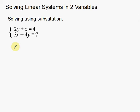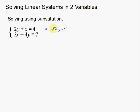The first thing you notice about this problem is that we don't have a variable that is by itself. So one of the first things I have to do is take one of my equations and solve for a single variable. You want to make this as easy as possible. Notice that x here has no number in front of it, so it's the easiest to solve for — I just subtract 2y to the other side. So x equals negative 2y plus 4.